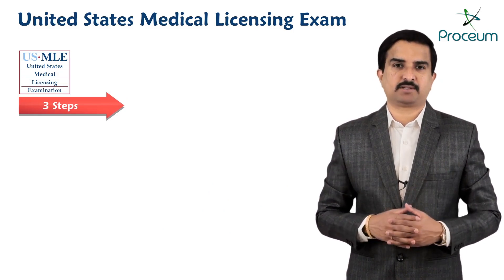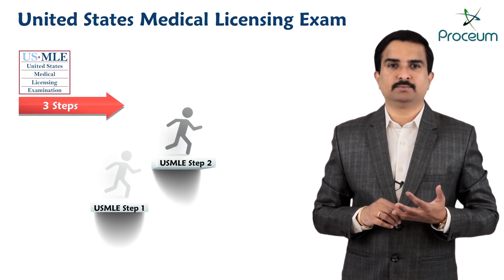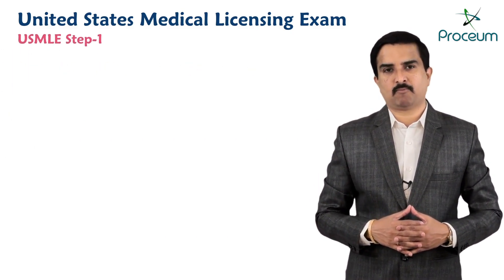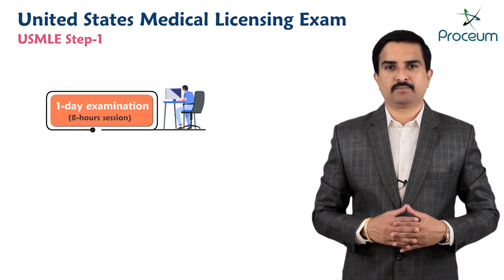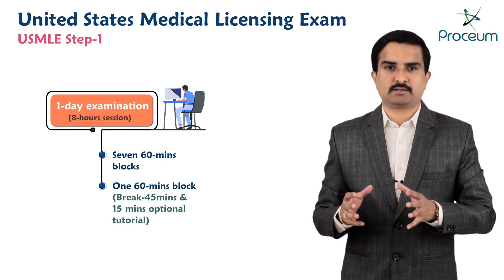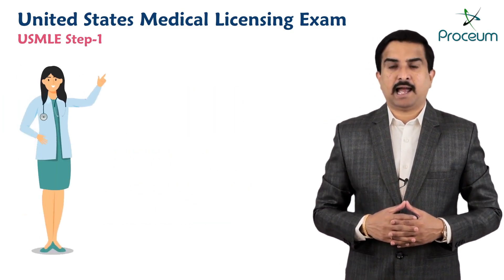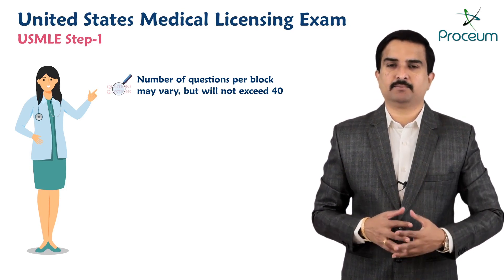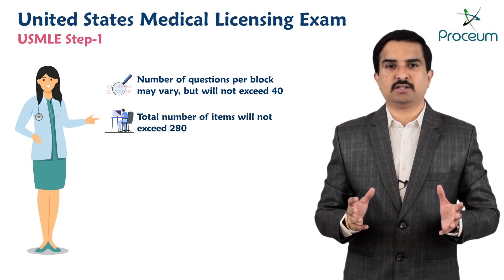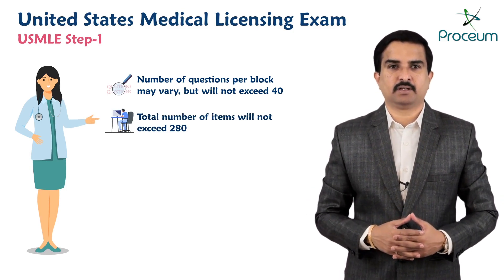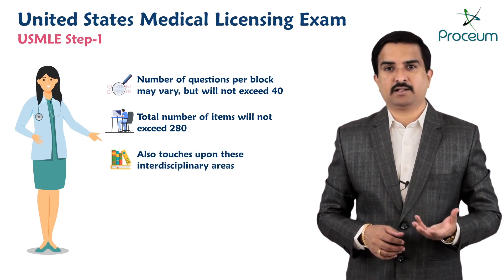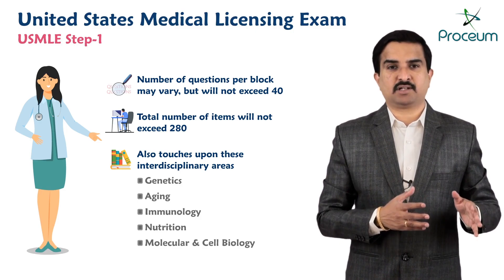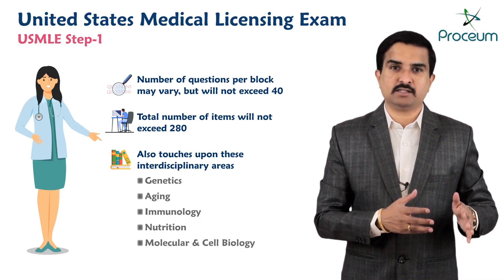USMLE has totally three steps: Step 1, Step 2, and Step 3. USMLE Step 1 is a one-day examination divided into 60-minute blocks and administered in an 8-hour testing session. The number of questions per block may vary but will not exceed 40, and the total number of items on the overall examination will not exceed 280. It covers interdisciplinary areas like genetics, aging, immunology, nutrition, and molecular and cell biology, in addition to core subjects like anatomy, physiology, biochemistry, pathology, pharmacology, and microbiology and immunology.